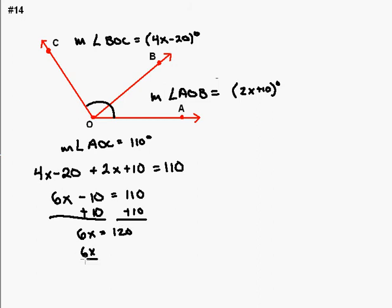Dividing both sides of that equation by 6, which is the coefficient of the variable, we wind up with 120 divided by 6. So we wind up with x being equal to 20.